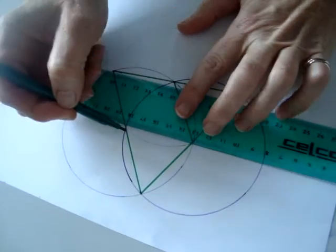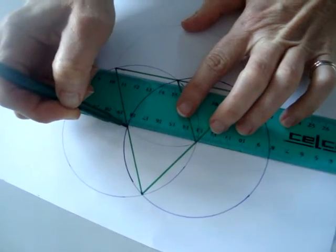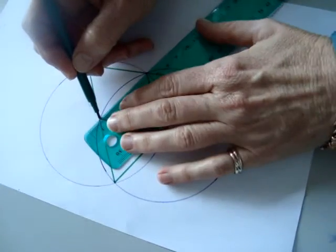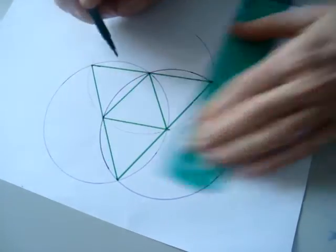So we've got now four equilateral triangles, which gives us our regular triangular pyramid, otherwise known as a tetrahedron.